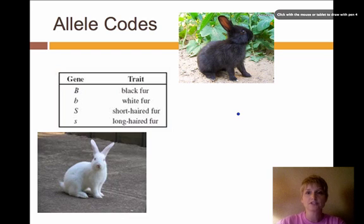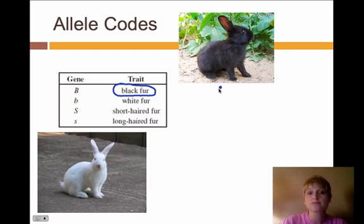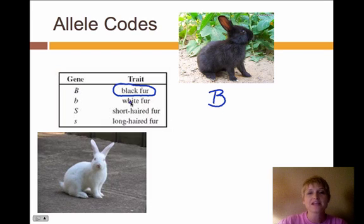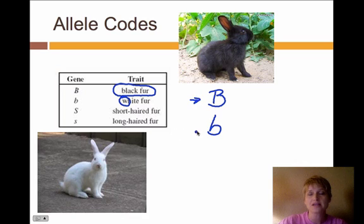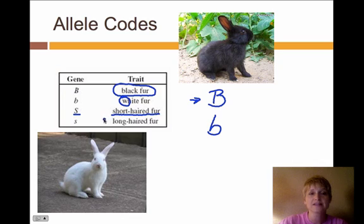We use allele codes — it's a kind of shorthand. We look at the dominant trait, and in the case of these rabbits, black fur is dominant to white fur. We would use a capital B to indicate that dominant trait and a lowercase b to indicate the recessive trait. So even though the recessive trait is white fur, we're not going to use a lowercase w — we stick with that b. A capital B indicates black fur and a lowercase b indicates white fur. Similarly, the dominant trait is short-haired fur, so we use a capital S to indicate that dominant trait, and a lowercase s to indicate the recessive trait of long-haired fur.